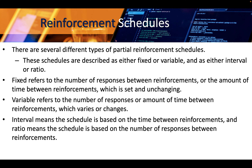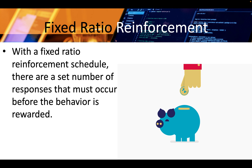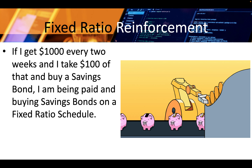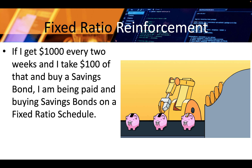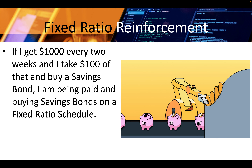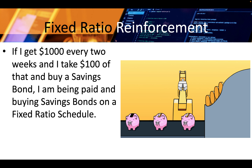Fixed ratio reinforcement: with a fixed ratio reinforcement schedule, there are a set number of responses that must occur before the behavior is rewarded. For example, if I get $1,000 every two weeks and I take $100 of that and buy a savings bond, I am being paid and buying savings bonds on a fixed ratio schedule.